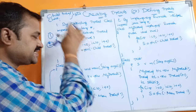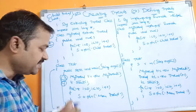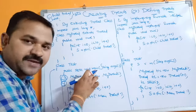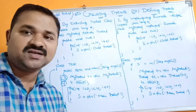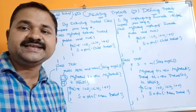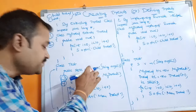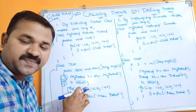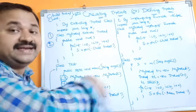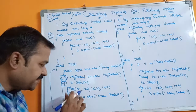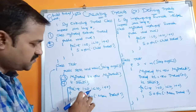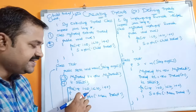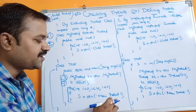Once the run() method execution is complete, control comes back to the main method. This main method is called the main thread — every Java program contains one thread, which is the main thread. In the main thread we are calling our child thread using t.start(). The main thread body also has a for loop.